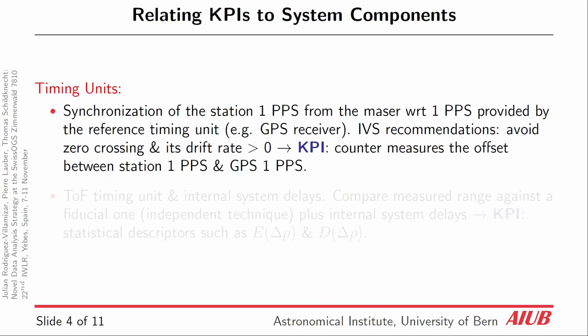Let's do a brief recap about different KPIs that are already existing in normal operation of any station. For the timing units, we can distinguish between two. The first one is how we can synchronize the pulse per second derived from the station with respect to the pulse per second from our timing unit — we need that to define the time scale of timestamps. We can compare the offset between the two and how constant it is in time.